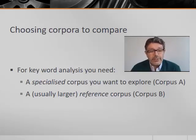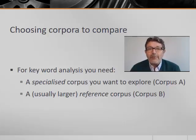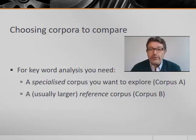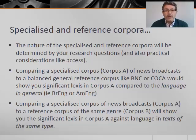To do keyword analysis using AntConc or any other software program like Wordsmith, we need some basic data. We need a specialized corpus — corpus A — and a reference corpus — corpus B. Usually, but not always, the reference corpus is larger and more general than the specialized corpus, but this need not be the case. It all depends on what you want the keyword analysis to do. The nature of your specialized and reference corpora will be determined by your research questions and also practical considerations like access and copyright.